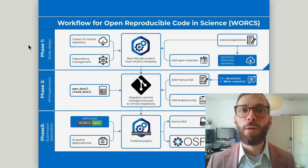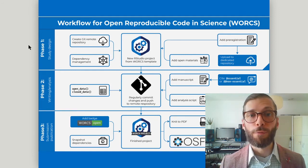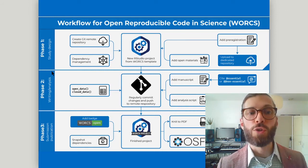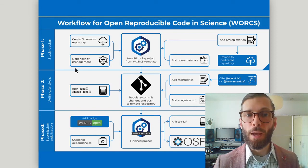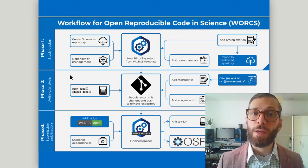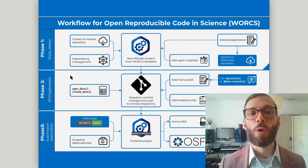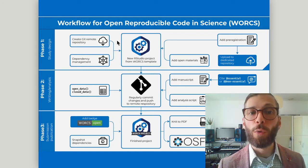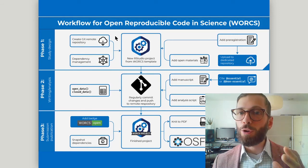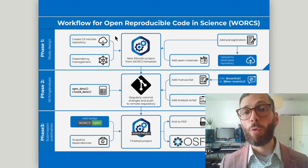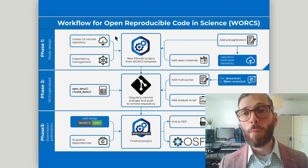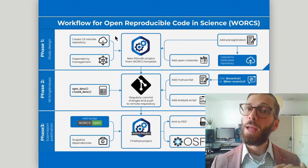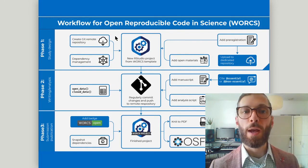So let's look briefly at the workflow itself. We distinguish three phases: phase one is study design, two is writing and analysis, and three is submission and publication. In the first phase you create a new R Studio project from the WORKS template and it is directly and automatically connected to GitHub. To this project you can add different things — think for example about open materials or a pre-registration, which you can also upload to a dedicated repository, but it's enough to just have it on GitHub.